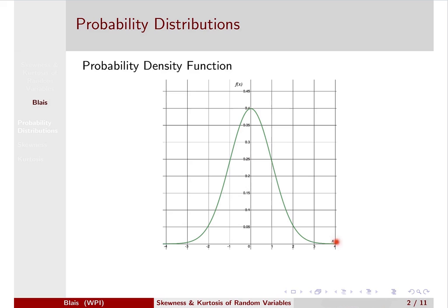We need to get used to a little bit of the terminology when we look at distributions. The first is what we call the center of the distribution. The center of a distribution happens within one standard deviation of the mean. Because this is the standard normal density, we have mean zero, and integer values one and two standard deviations to the right of the mean, so on and so forth. We call all values within plus or minus one standard deviation of the mean the center.